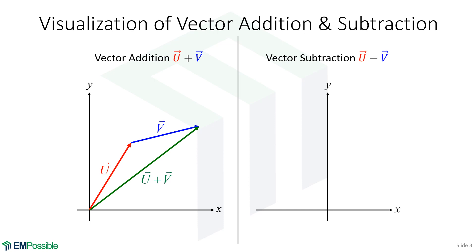Vector subtraction is almost the same thing as vector addition. We write vector u, but since we're doing a subtraction, it's like we add a negative v on top. We can draw v extending from the tip of u, but in the opposite direction that v would point. So we can think of it as adding a negative v or drawing v in the opposite direction. Either way, the composite vector still goes from the start of u to the end of v — that's vector subtraction.